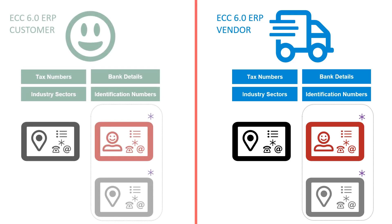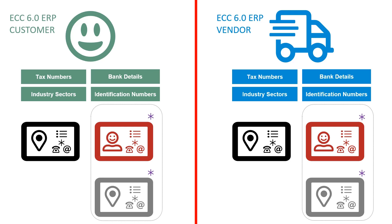Now let's double the size of this hairball. Everything we've just seen — all of these objects for Vendor Master — is also true for Customer Master. It's the same creation of a single Business Address Services record for the customer, the same ability to create an unlimited number of contact persons, and the same story about Business Address records for each contact person.